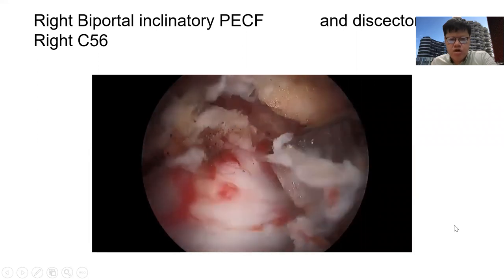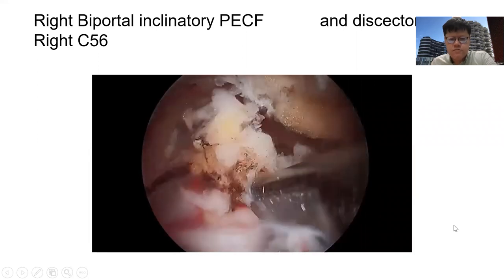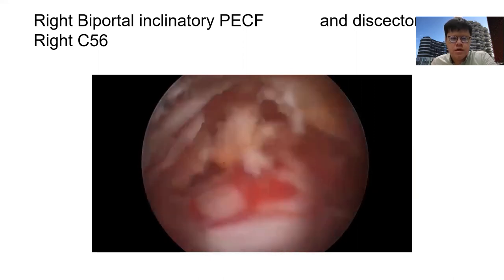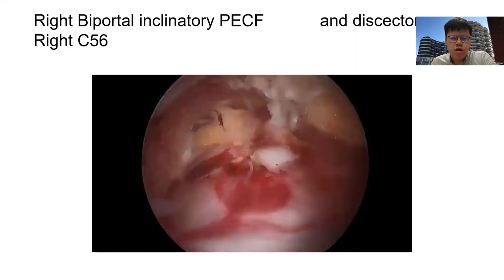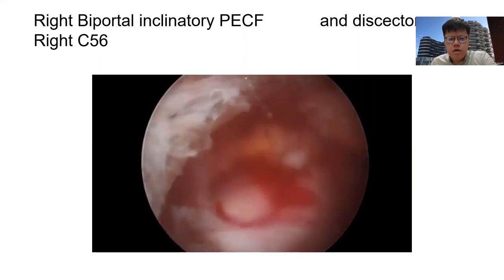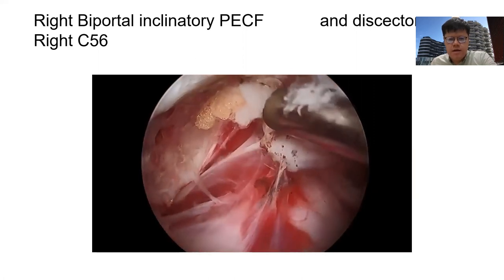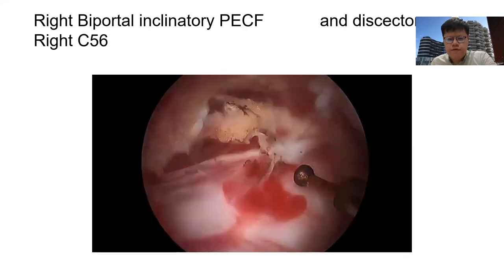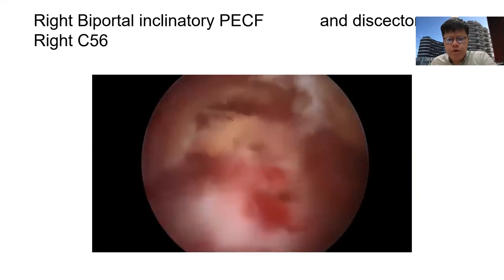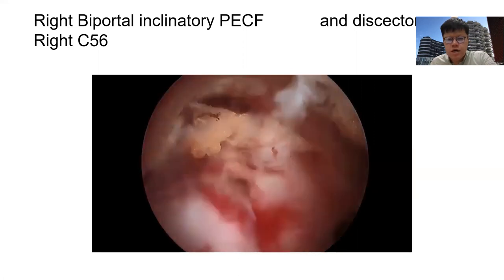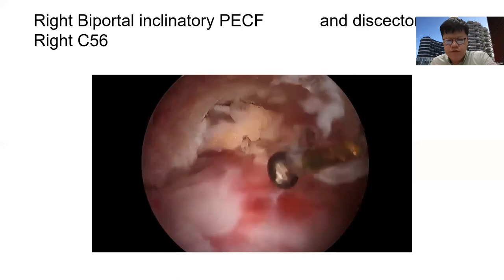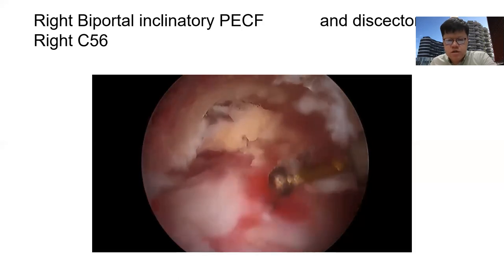From the visualization, we are standing on the contralateral side, decompressing the contralateral foramen — I'm standing on the left, decompressing right C5-6. As you can see from the video, you can explore the spinal cord and the exiting nerve root is visualized in a very nice manner by biportal. Biportal comes from two different ports, so the working cannula and the viewing cannula are from different ports, and hence there's freedom of movement of the working instruments.